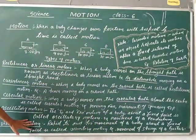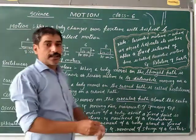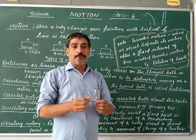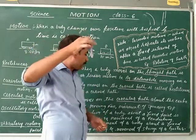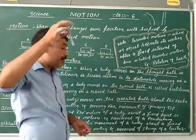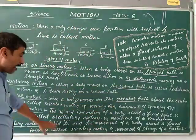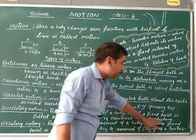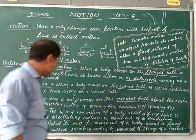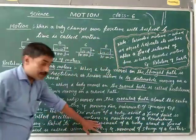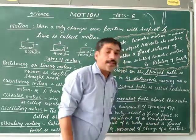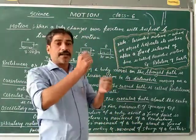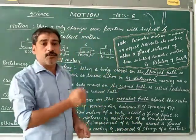Next, rapid to-and-fro motion. Rapid to-and-fro motion means very fast to-and-fro motion about a fixed point. This rapid to-and-fro movement of a body about a fixed point is called vibratory motion. For example, the movement of a string of a guitar.